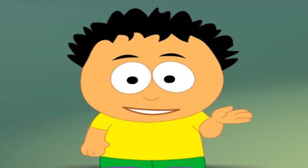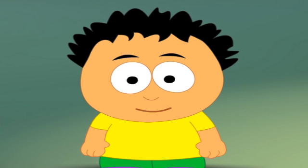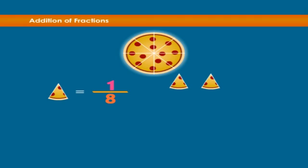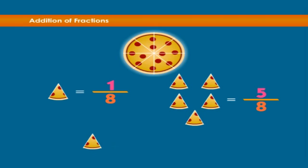Let's look at one more example quickly. Take a pizza with eight slices. One piece is one-eighth. And five pieces is five-eighths. Let's add the two.